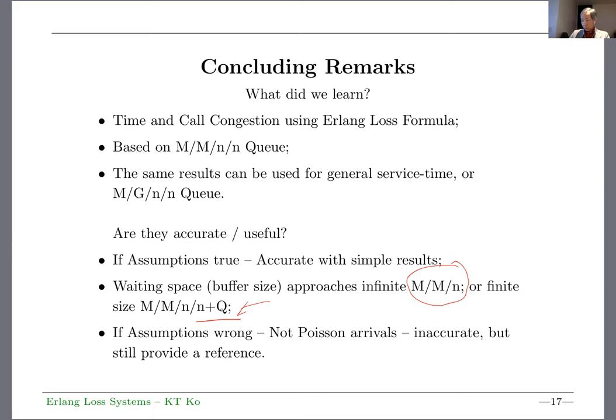What if the assumptions are wrong? For example, if arrival is not Poisson, the Erlang Loss system will be inaccurate but still provides a reference. What method can you use when arrival isn't Poisson? Do some simulation, which requires more effort and time. The Erlang Loss formula gives quick results if assumptions are correct. With that remark, I finish the talk today. Thank you very much for your time. Bye-bye.